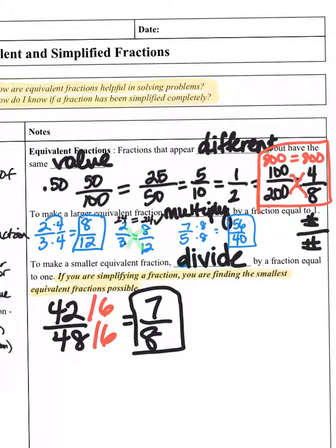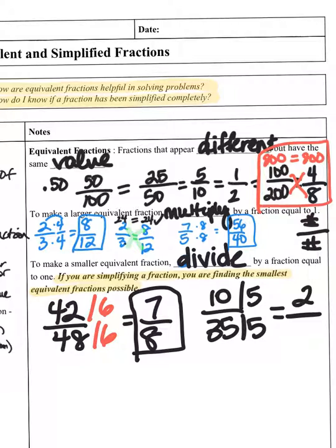So that would equal 7 over 8. There's no other number I can put into 7 and 8 besides 1, so this is a completely simplified fraction. If you have 10 over 35, since they end in 0 and 5, I know I can divide both by 5 and I get 2 over 7, which is completely simplified.